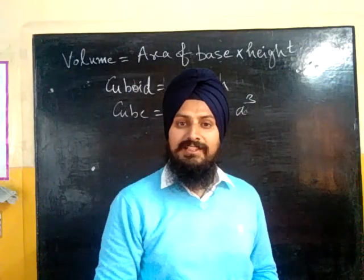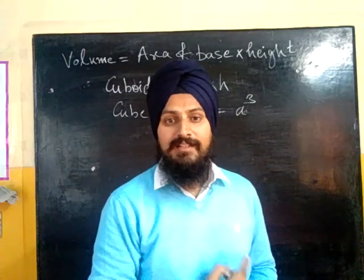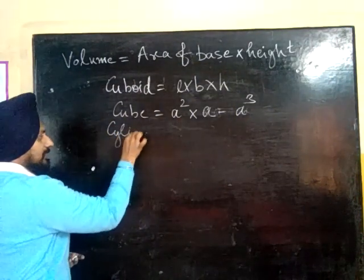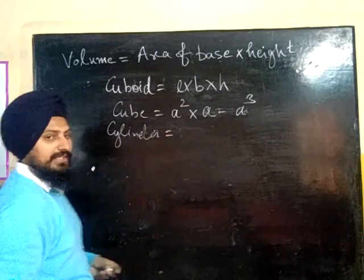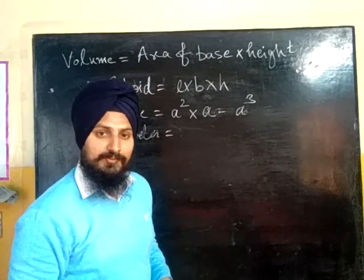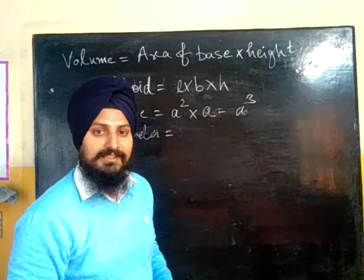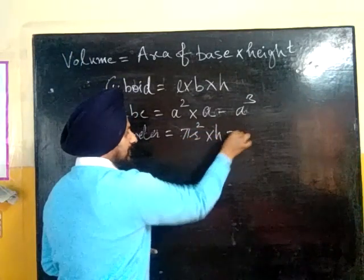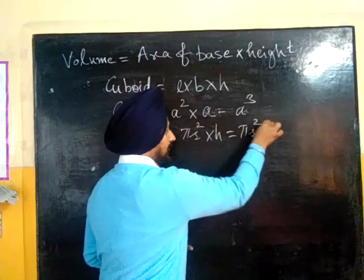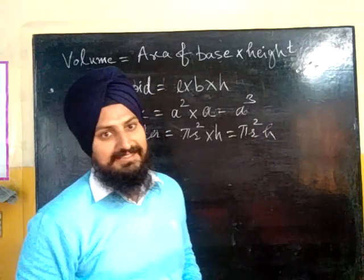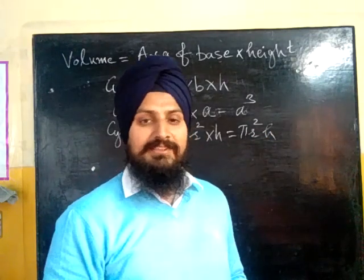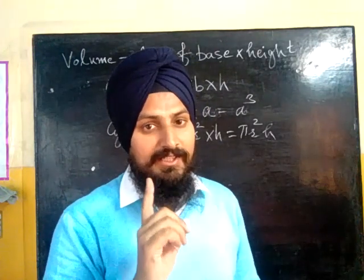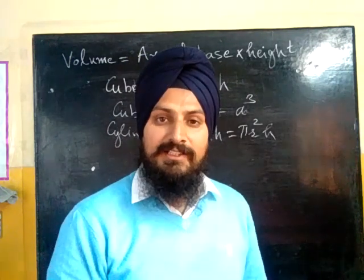Similarly, we can understand the concept of volume of a cylinder. In a cylinder, what is the area of the base? The base is circular, so it means pi r squared. Pi r squared multiplied by height gives us pi r squared h. It is very easy to understand volumes by the same method: area of base multiplied by height.